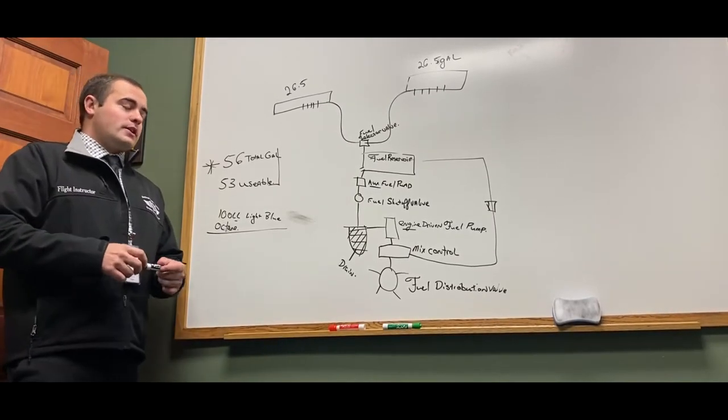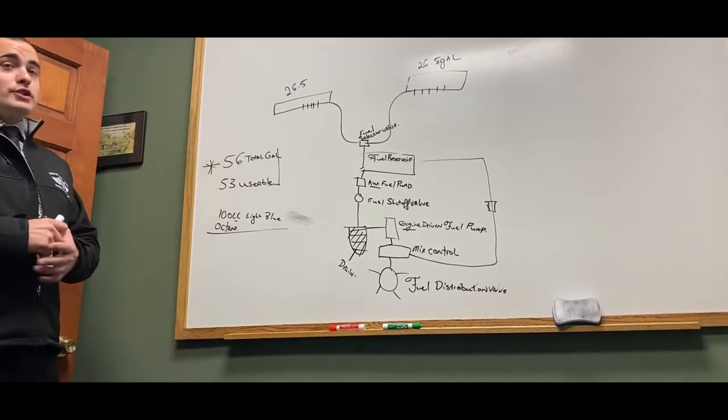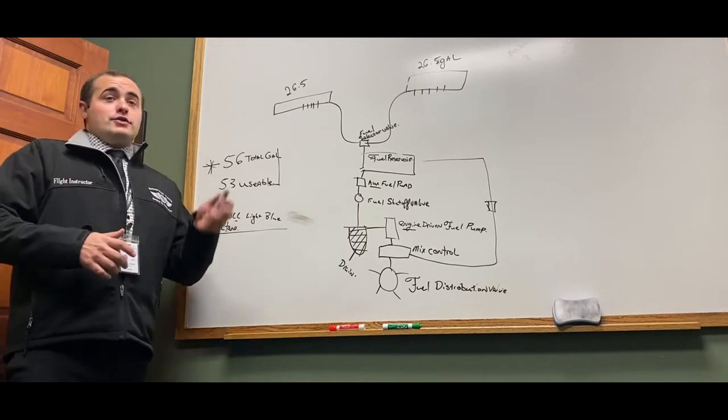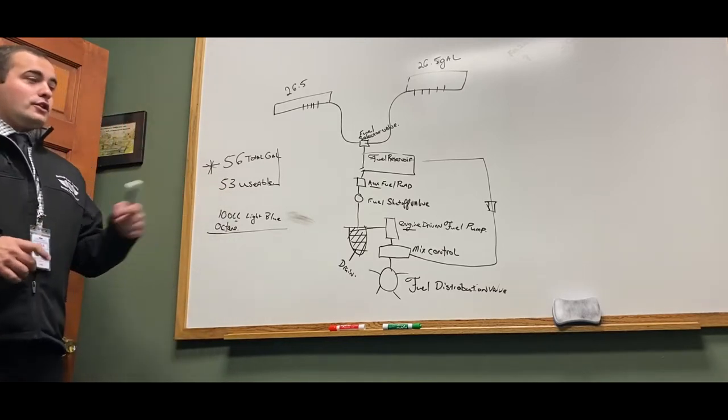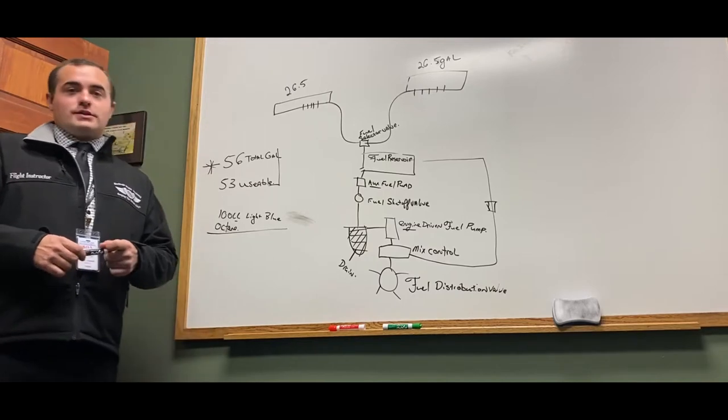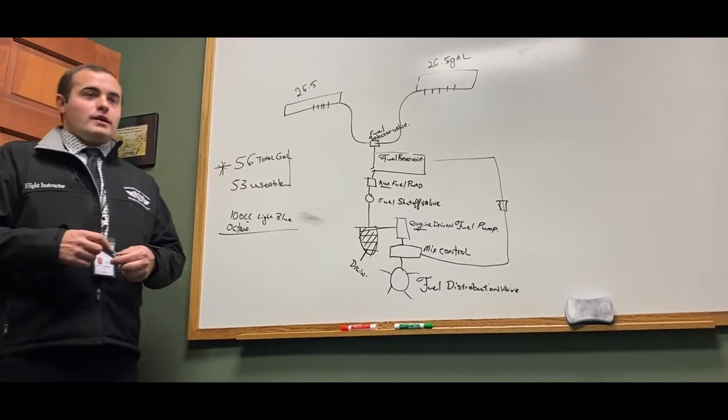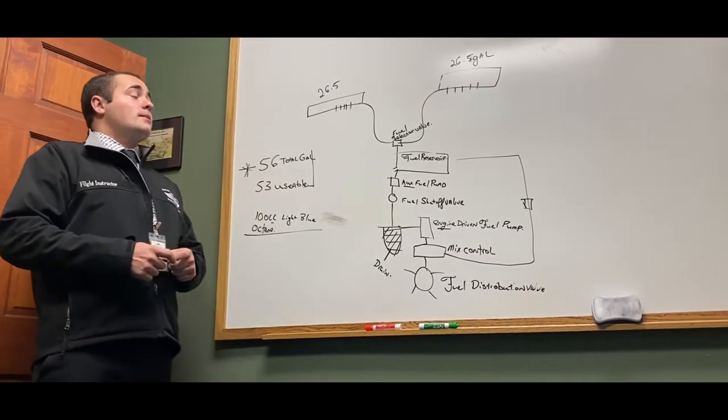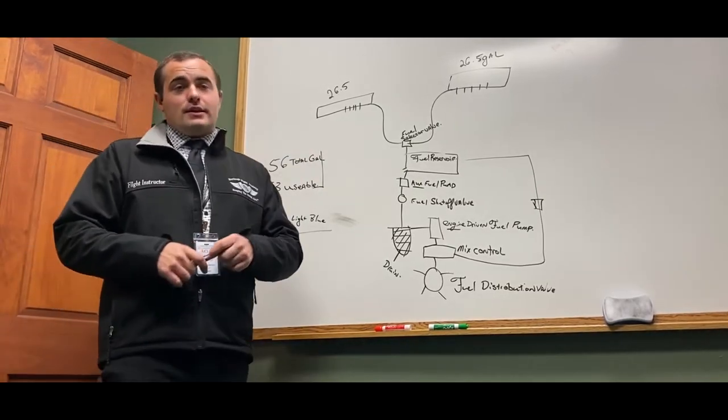Today we're going to be talking about the fuel system in our Cessna. Our Cessna is fuel injected. We have two tanks in our Cessna and they are actually our wings. We have a total of 56 gallons but we can only use 53 of those gallons. It's split evenly between the two tanks.